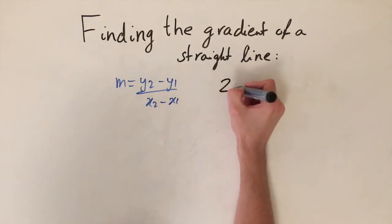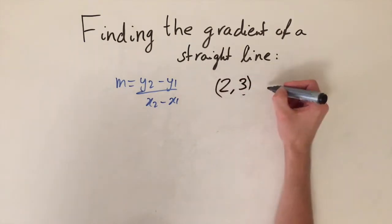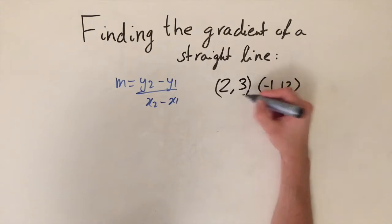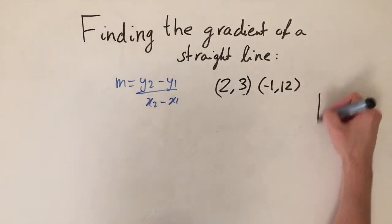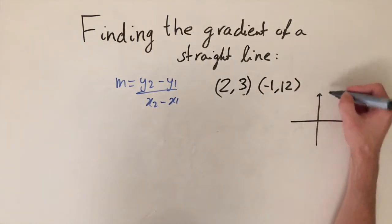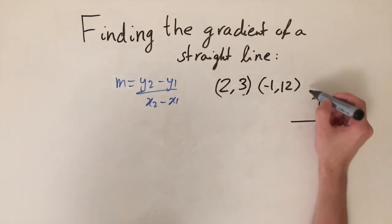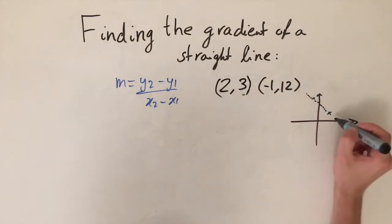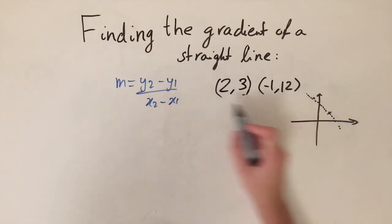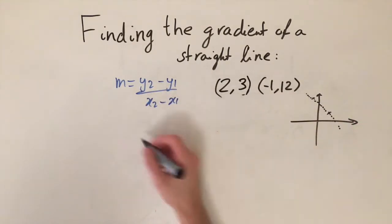So let's look at finding the gradient between the points (2, 3) and also (-1, 12). If we think on a graph, we're given two points, so (2, 3) maybe that's about here and (-1, 12) maybe that's about here. So we want to know the gradient of the straight line that passes through these points right here.